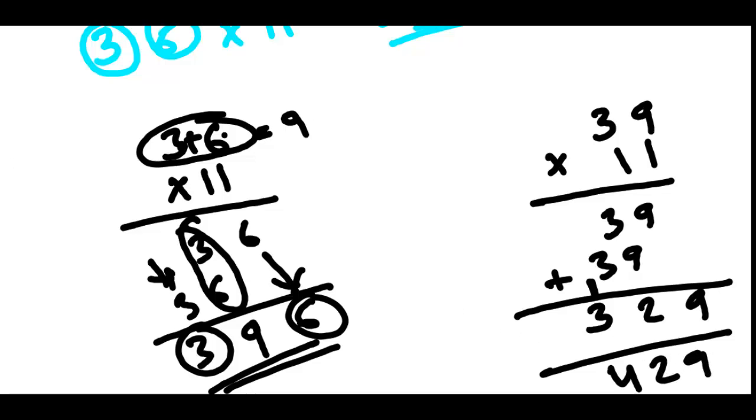So from here, the trick is, if the addition of the number, addition of both numbers is more than 10, then you have to add one more at the front. That's the simple trick.